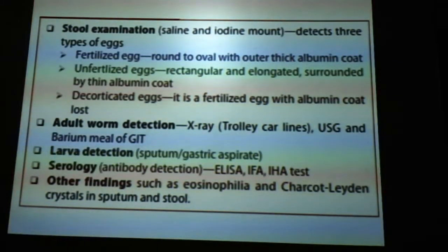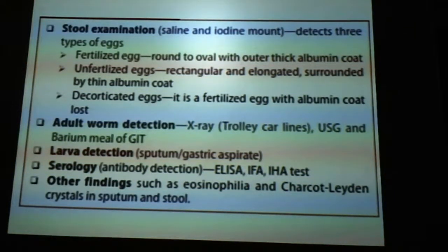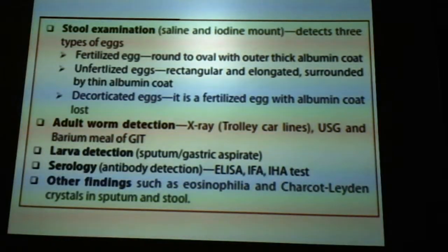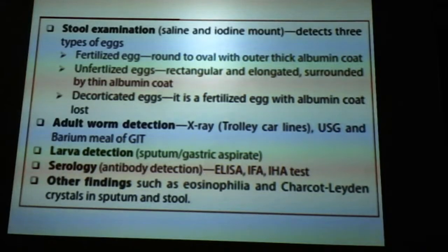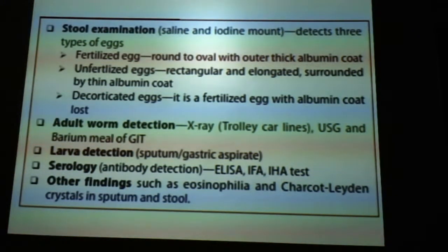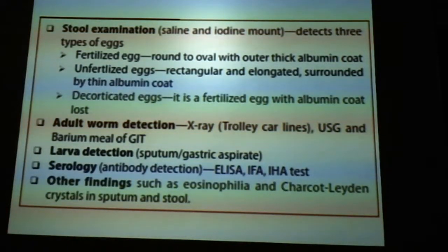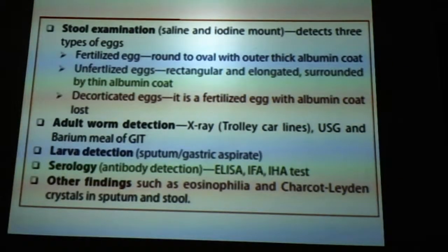The mainstay for diagnosis of ascariasis is stool examination. Under stool examination, we have two types of mounts — saline and iodine mount — which detect the three types of eggs. By seeing the morphology you have to classify them as fertilized, unfertilized, or decorticated eggs. Adult forms can be detected directly by X-ray, which shows trolley-car lines; you can also perform USG and barium meal of GIT. For larval detection, sputum or gastric aspirate can be examined microscopically. Serology for antibody detection includes ELISA, IFA, and IHA tests. Eosinophilia and Charcot-Leyden crystals in sputum and stool are also supportive findings.